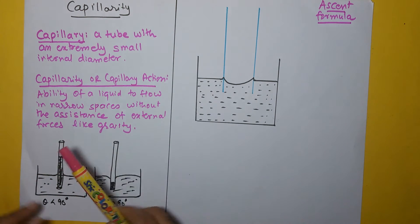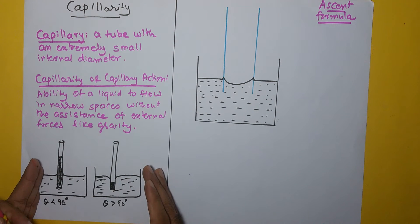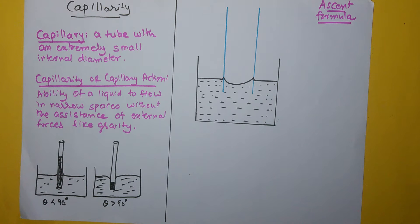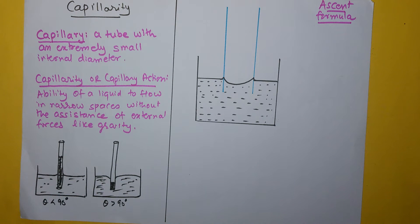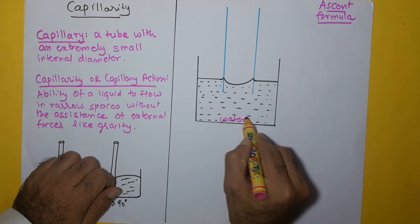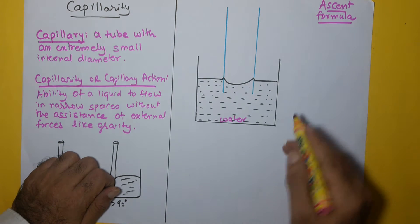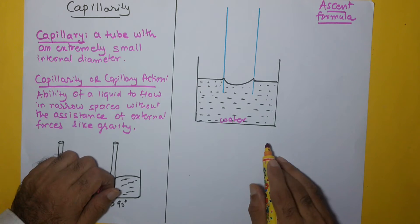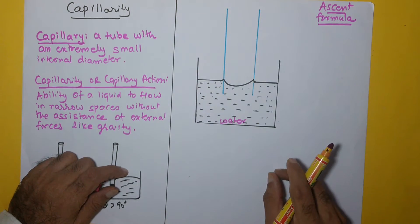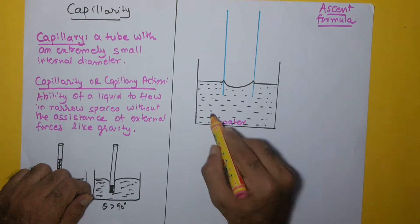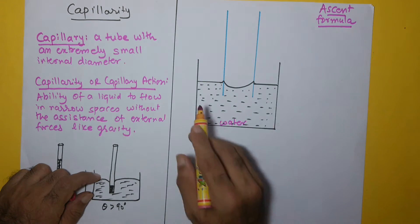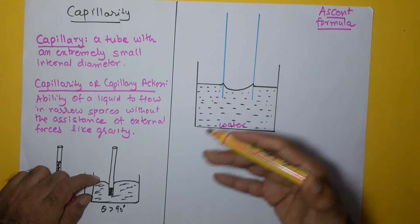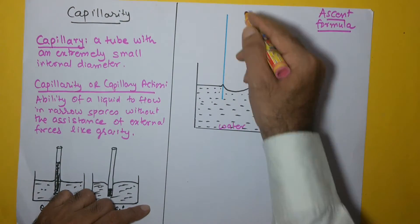We discussed capillarity in the previous video and now we will be looking at the ascent formula and arrive at an equation for the height through which water rises in relation to its surface tension. I have taken this example of water in a container with a capillary tube — an exaggerated drawing to help illustrate the forces. The capillary in reality would be extremely small. Water is going to rise, but here I have shown it at the same level first, so we can look at the forces which act on it.